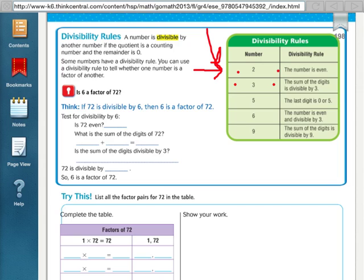For instance, say they gave you the number 81. And they say is 3 a factor of 81. Well, the sum of the digits means 8 plus 1. 8 plus 1 is 9. If that number is divisible by 3, then 3 is a factor. 9 is divisible by 3. So, 3 would be a factor of 81.